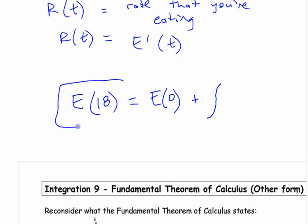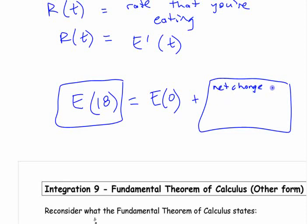If we want to know how much you've eaten, like, the amount you've eaten at 18. The amount you've eaten at 18 here. It's however much you had eaten at zero plus the net change in how much you eat between zero and 18, right? So before we write the integral, let's write that. Let's say net change in amount eaten between zero and 18, 18 hours. Between midnight and six o'clock tonight.